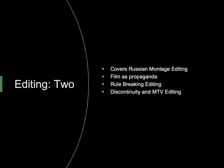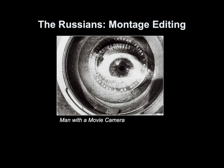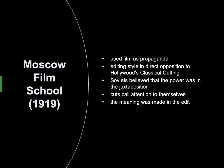The Russians — montage editing. The first film school ever was in Moscow, opening in 1919. In the school, they used film as propaganda. The editing style used was in direct opposition to Hollywood's classical cutting. The Soviets believed that the power was in the juxtaposition and that the cuts could call attention to themselves. They believed the meaning was made in the edit.